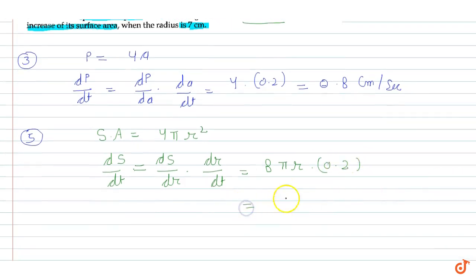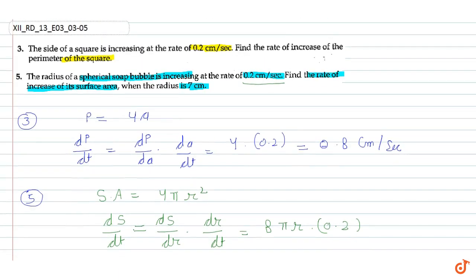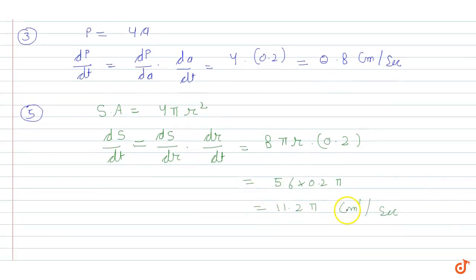So we get 8 into 7, which is 56, into 0.2π. 56 into 0.2 is 11.2π cm² per second. So this is our final answer.